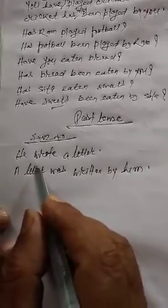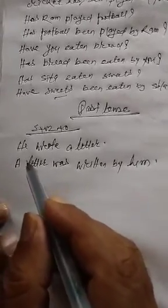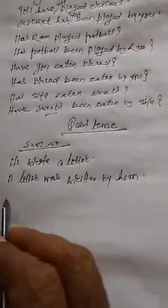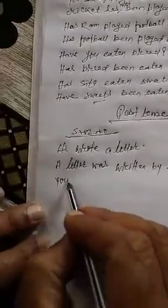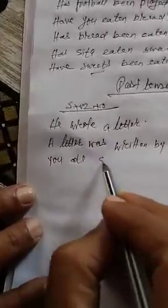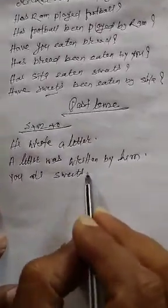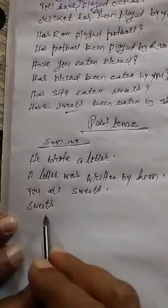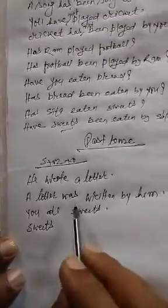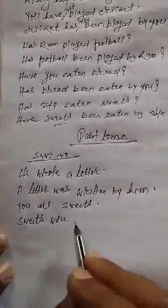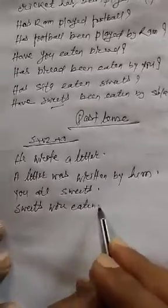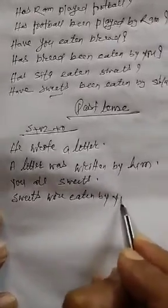In case of a singular subject, 'was' is used; in case of a plural subject, 'were' is used. In simple past tense, we use only the second form of the verb. For example: 'You ate sweets.' Sweets is plural, so: 'Sweets were eaten by you.'